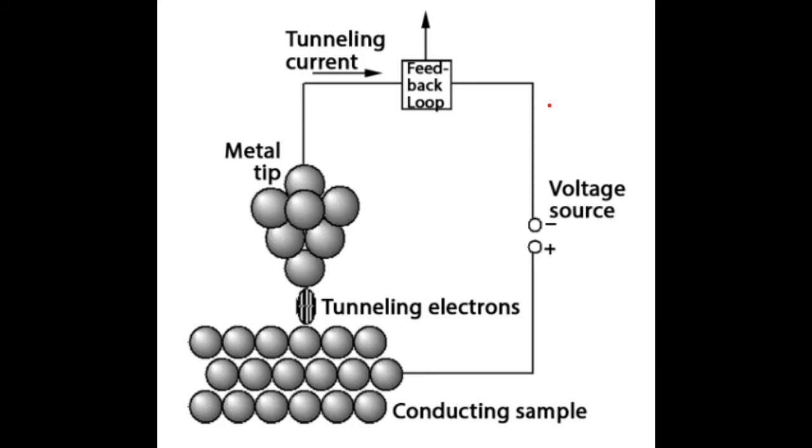The metal tip and the metal are both connected to a voltage source that creates a current. This current passes from the metal tip to the metal surface and vice versa. Within that passing current are electrons that are essentially tunneling through an energy barrier.